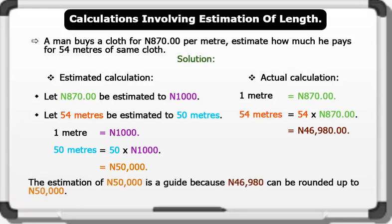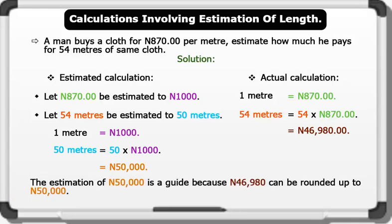The estimation of 50,000 naira is a guide because 46,980 naira can be rounded up to 50,000 naira. Therefore, it is a good guess. That's brilliant.